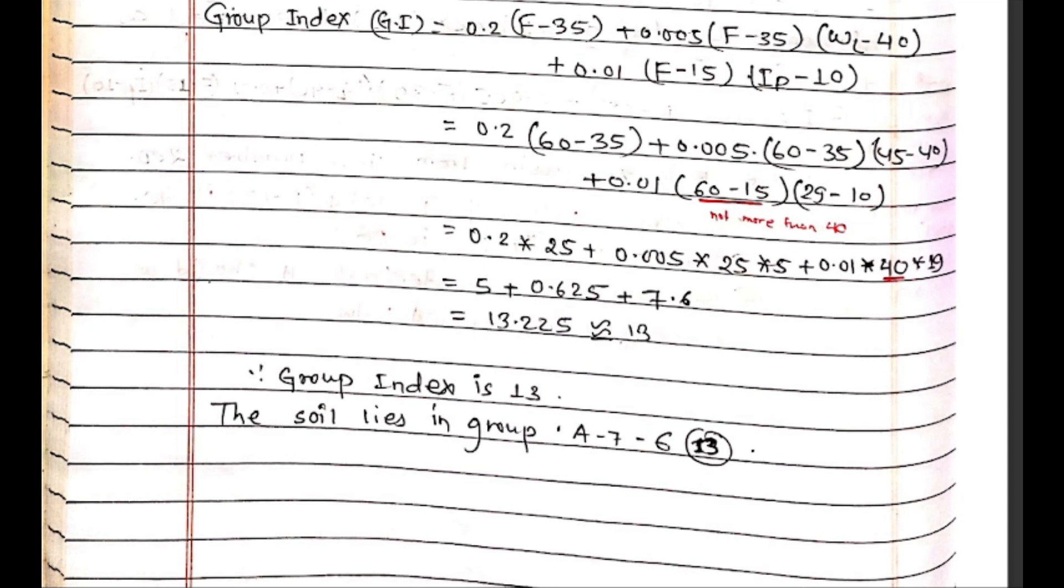For the maximum values: F-35 or F-15 value is 40 max, and WL-40 or IP-10 value is 10 max. Again, F-35 or F-15 value is 40 and WL-40 or IP-10 value is 10.